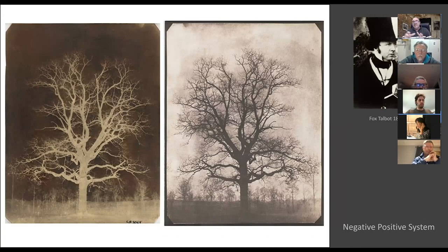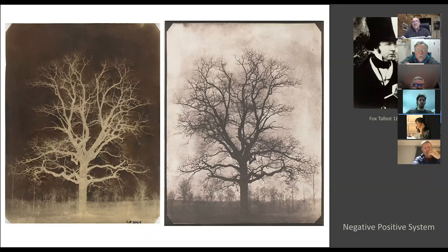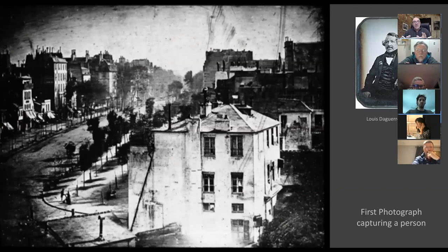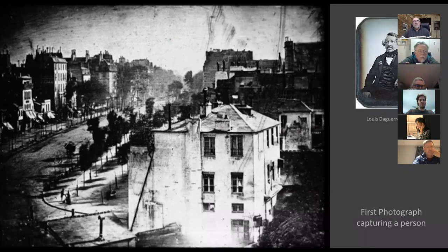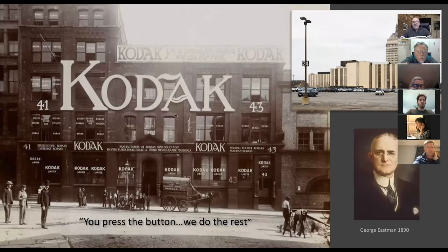On the other side of the channel, Fox Talbot was working on a negative-positive system. He was devastated when he heard that Niépce had taken the first photograph, though his system still exists today even in digital photography. This is Louis Daguerre, who took the first photograph recording a person — a man having his shoes shined. Because he stood still long enough, the exposure was made, and the moment mankind could record ourselves, photography took off.